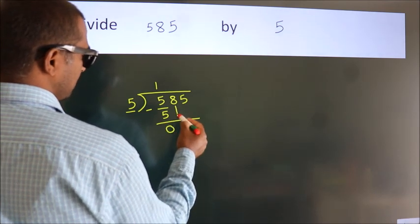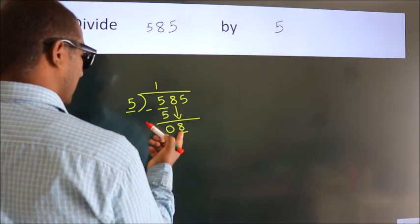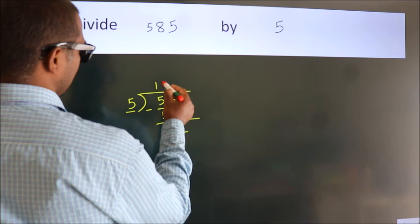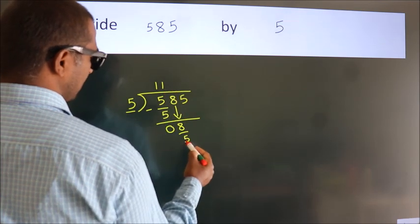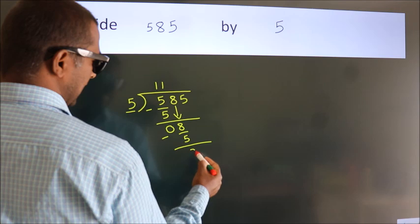After this, bring down the beside number. So, 8 down. A number close to 8 in 5 table is 5 once, 5. Now, we subtract. We get 3.